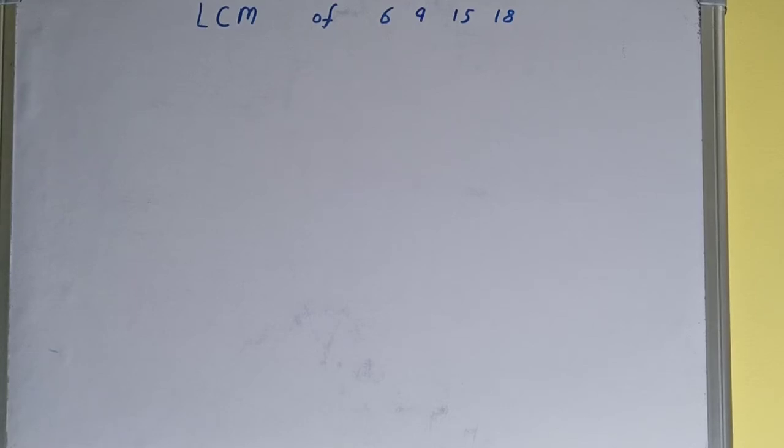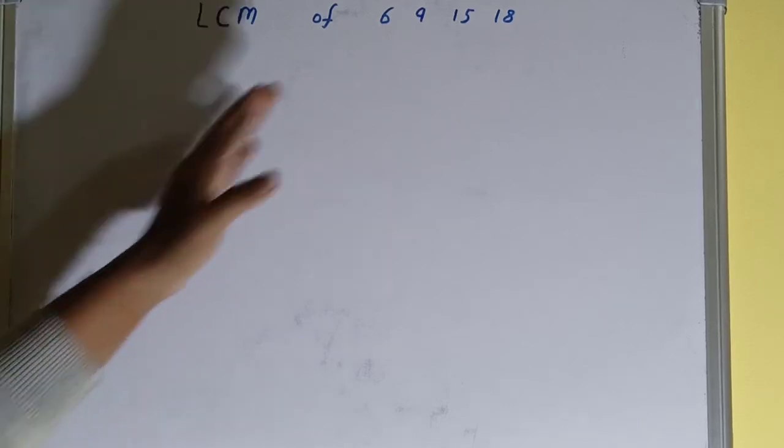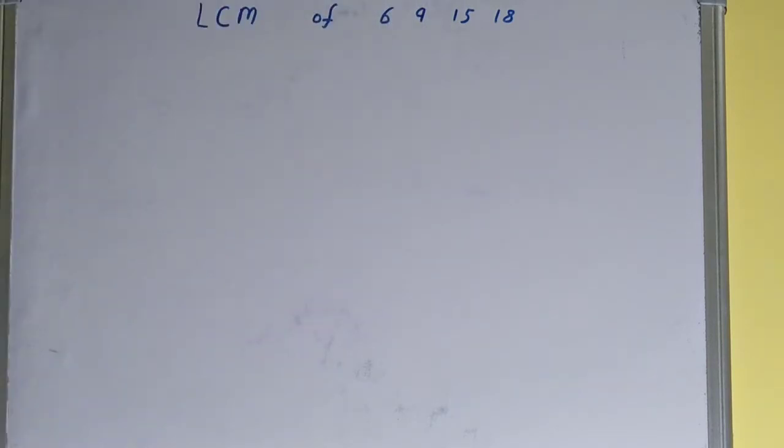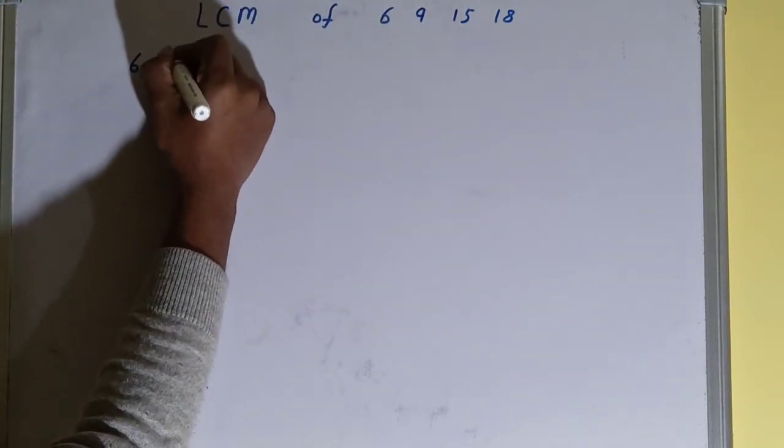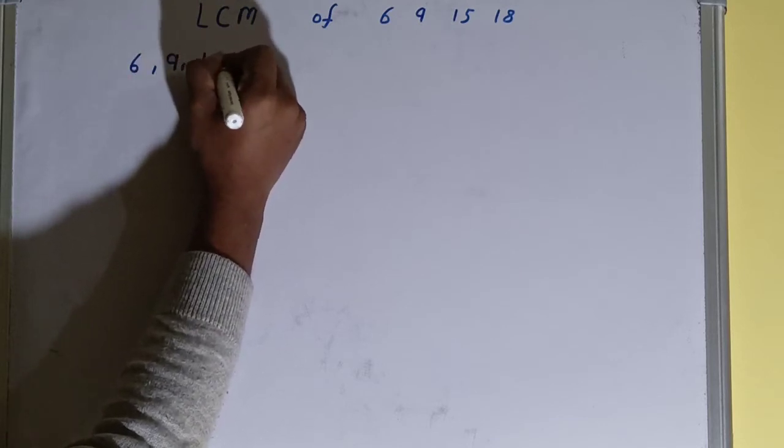Hello friends, in this video I'll be helping you with the LCM of the numbers 6, 9, 15, and 18. So let's start. To find it out, you need to write all the numbers like this: 6, 9, 15, 18.